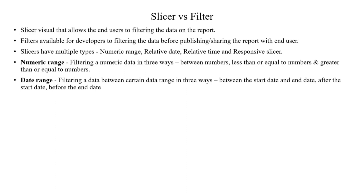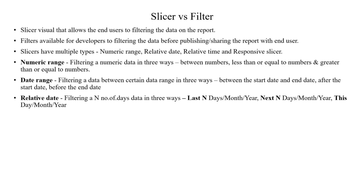For the Date Range slicer, you set a start date and end date. For example, from 2002, you can filter out the data. You can filter data after 2015 or below 2020 — before 2020. This is the date range option.